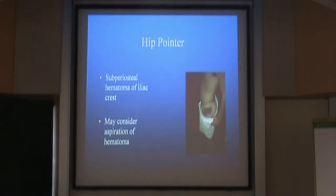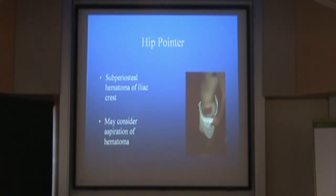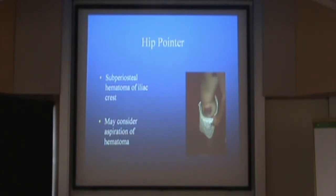Hip pointers — many orthopedic residents don't know what a hip pointer is. It's a subperiosteal hematoma over the iliac crest. With portable ultrasound machines, you can actually identify the hematoma, and if really painful, make an argument to aspirate it. But generally they just require ice and rest. The term is thrown around loosely — patients with trochanteric bursitis come in saying they have a hip pointer. They're different entities.